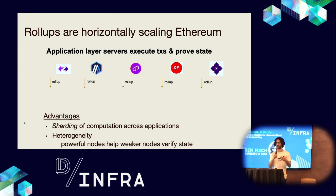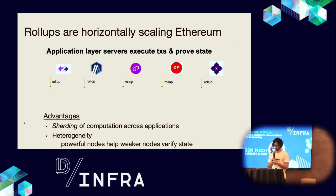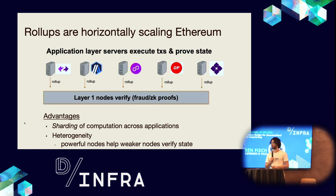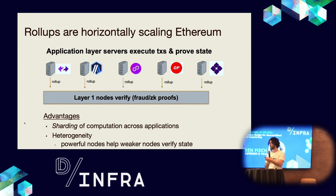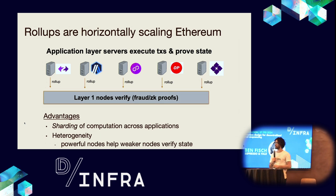This is starting to manifest in the way things are playing out with app chains on Ethereum, and every application wanting to become an app chain. Rollups are beautifully horizontally scaling Ethereum. Application layer servers — what rollups are doing at a high level — are executing transactions and proving state transitions that ultimately get settled or verified on the layer one. This enables sharding of computation across different applications, leveraging heterogeneity in the network where powerful nodes help weaker nodes verify state.